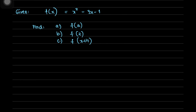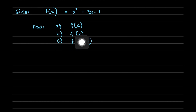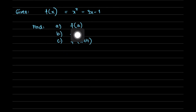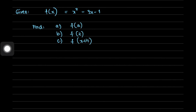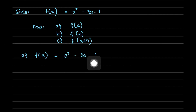Here is an example. Given f(x) = x² - 3x - 1, find: (a) f(a), (b) f(2), and (c) f(x + h). To solve, we replace x with the given argument. For f(a), we replace x with a, giving a² - 3a - 1. This is the simplest form and is our answer for part (a).